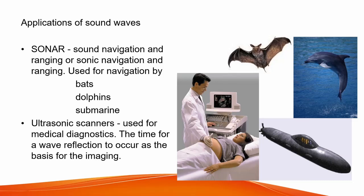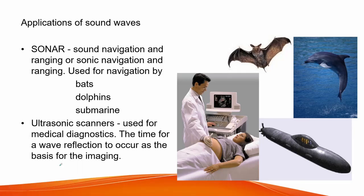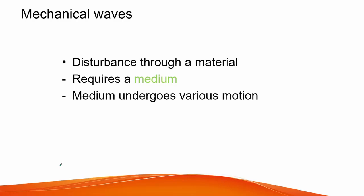In this section, we will talk about different types of waves and their formulation to predict their behavior. Mechanical waves are disturbances through a material. Waves require a medium that the waves can travel through. The medium, when waves travel through it, undergoes different types of motion, and this motion travels through a three-dimensional plane. Commonly, there are two types of waves: transverse and longitudinal waves.